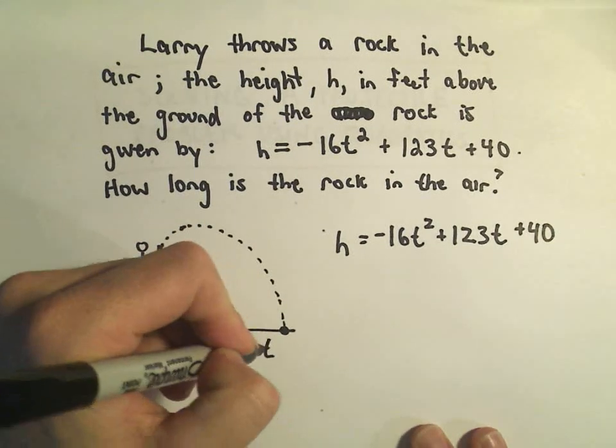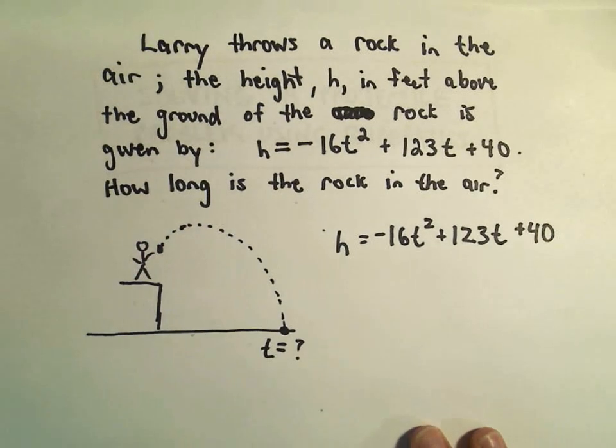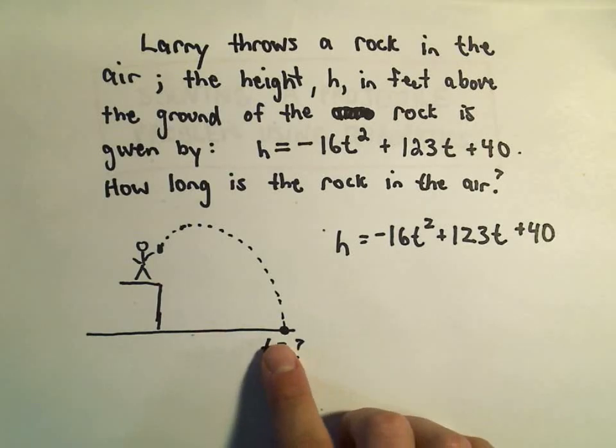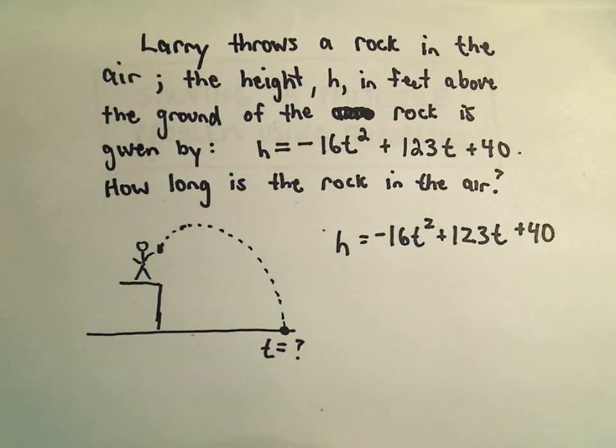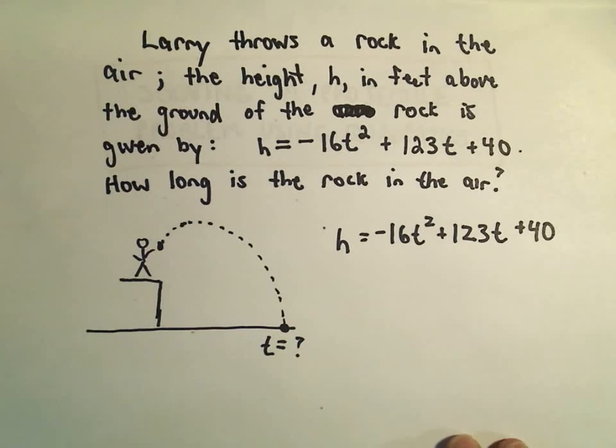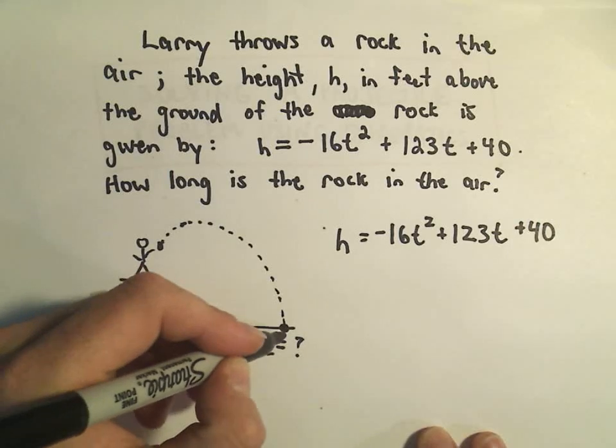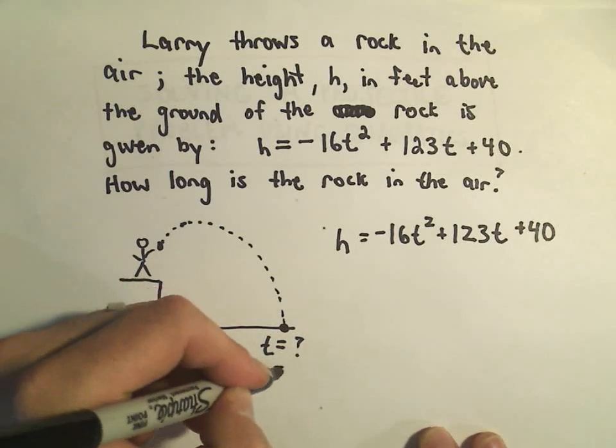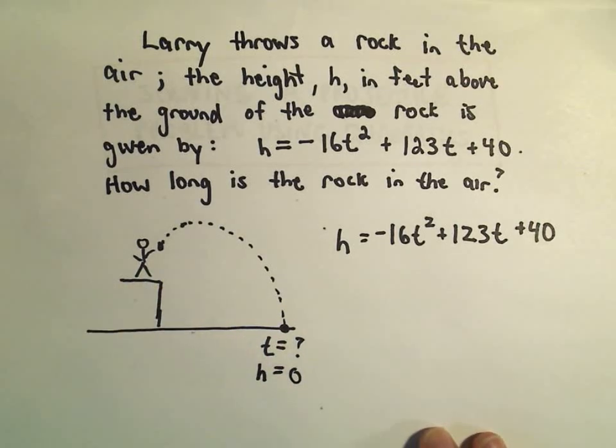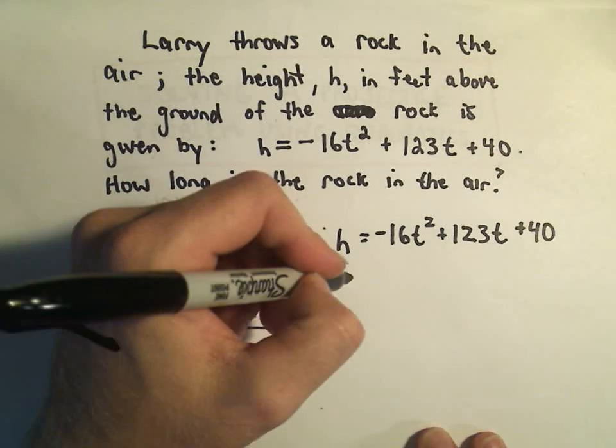So we want to know the time at which it hits the ground. Well, when it hits the ground, we can think how far above the ground is it. When it hits the ground, it's going to be 0 feet above the ground. So when it hits the ground, we don't know the time, but we know for sure that the height has to be 0.